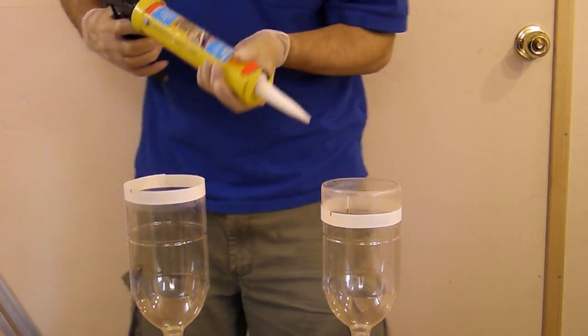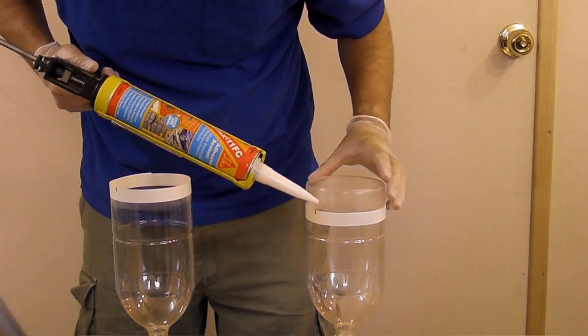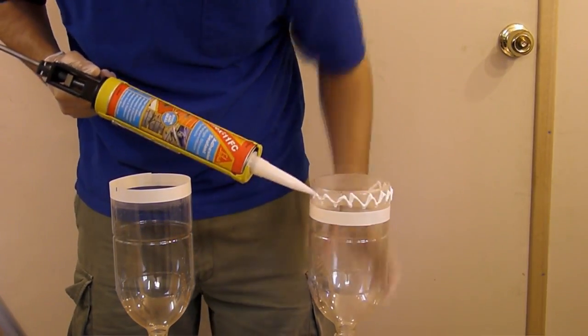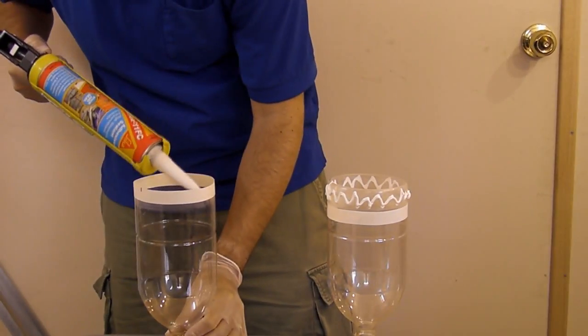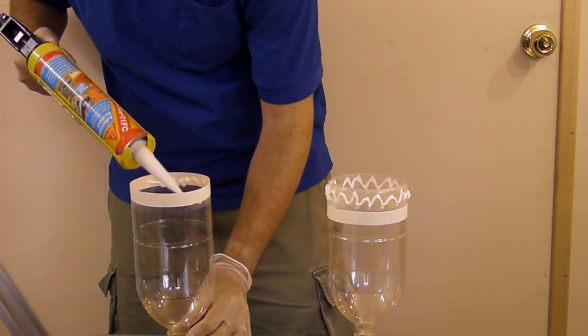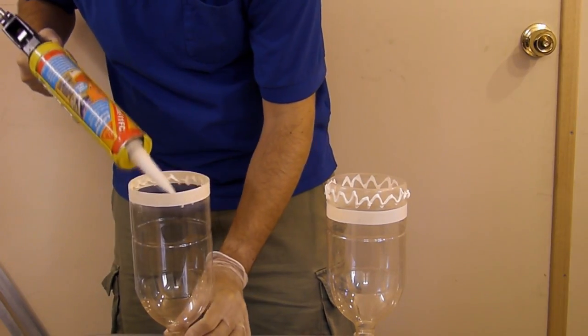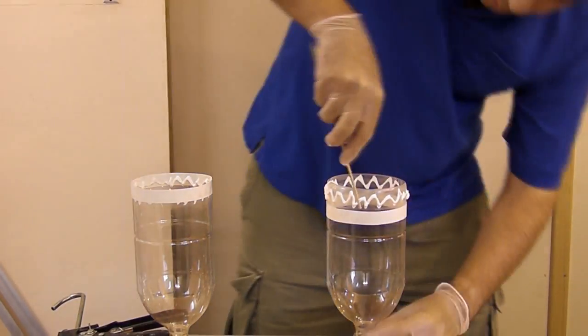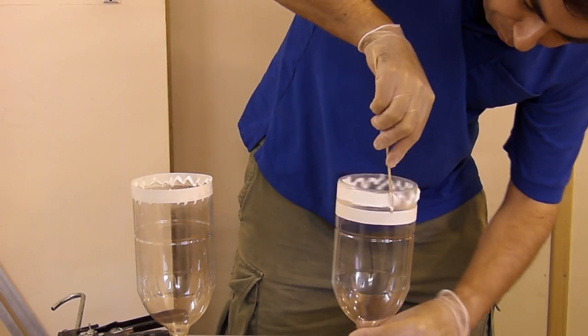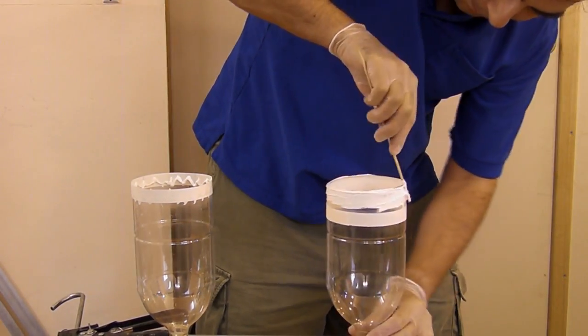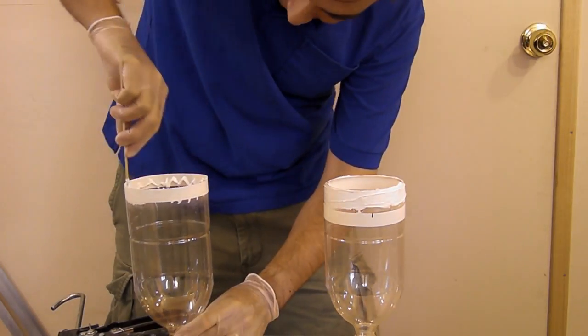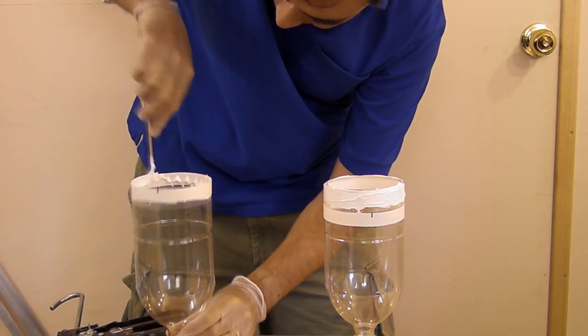Put the glue on, all the way around. Put some glue on the inside of the other one. And then use a skewer stick to spread that glue. Try to get it as evenly as possible.